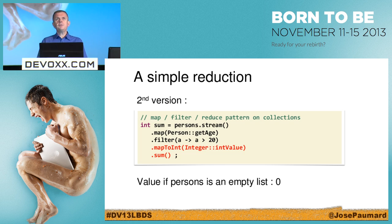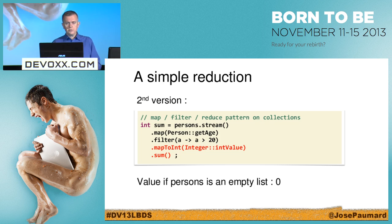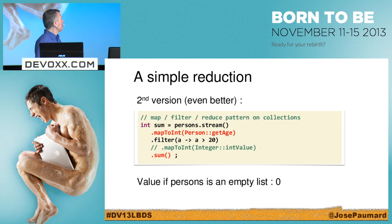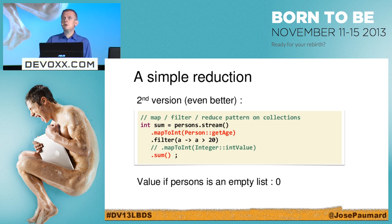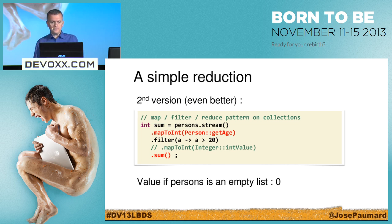I can go further: instead of doing the mapping at the end after the filter, I can do the mapping at the very beginning. Since age is already an integer, I can create the IntStream first, then filter, then sum. The filter method is then the filter from IntStream rather than Stream<Integer> — but it's really simple to write.